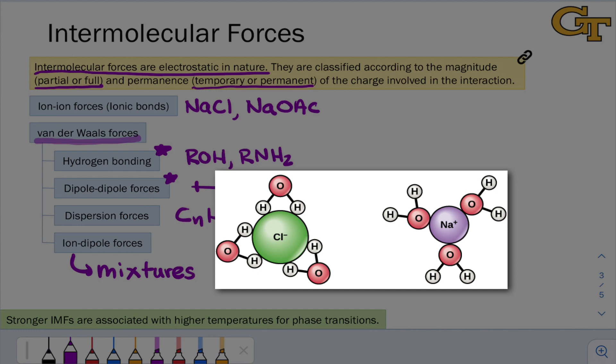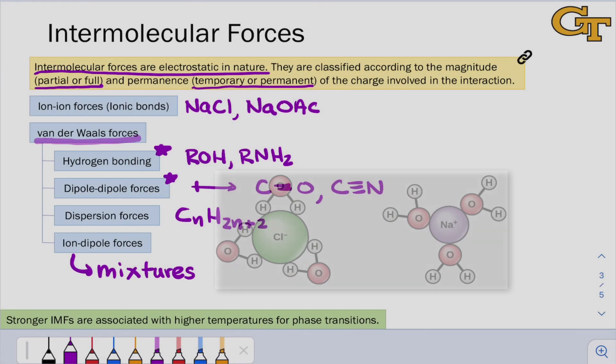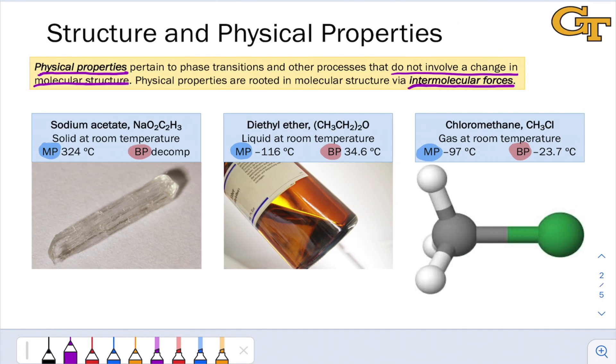And as you probably recall from your introductory chemistry course, stronger intermolecular forces are associated with higher temperatures for phase transitions, higher melting point, higher boiling point. So if we back up to the previous slide, the strongest IMFs are associated with sodium acetate. And indeed, what's going on here is arguably not even an intermolecular force, maybe the interionic force, ionic bonding.